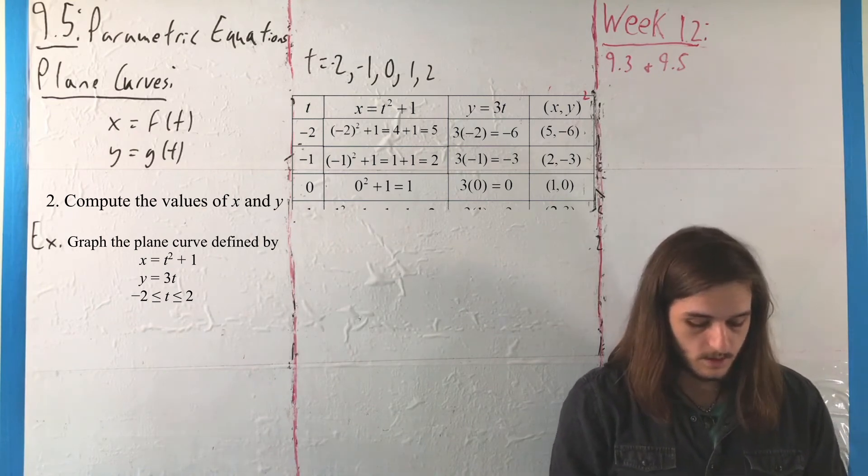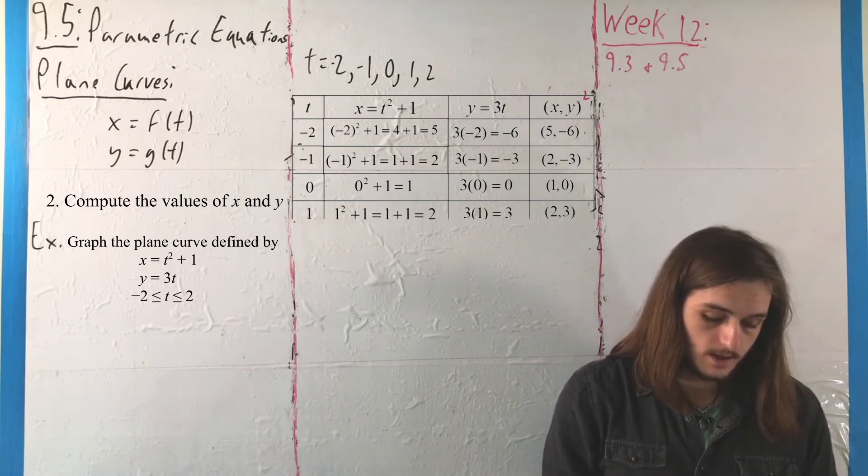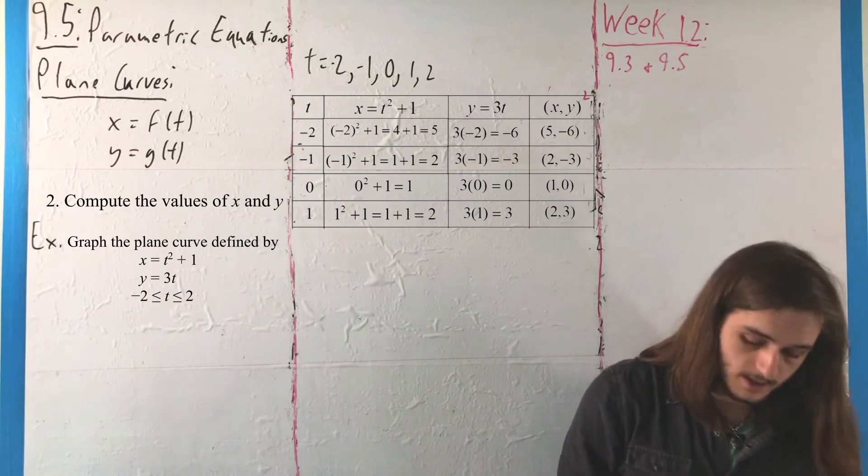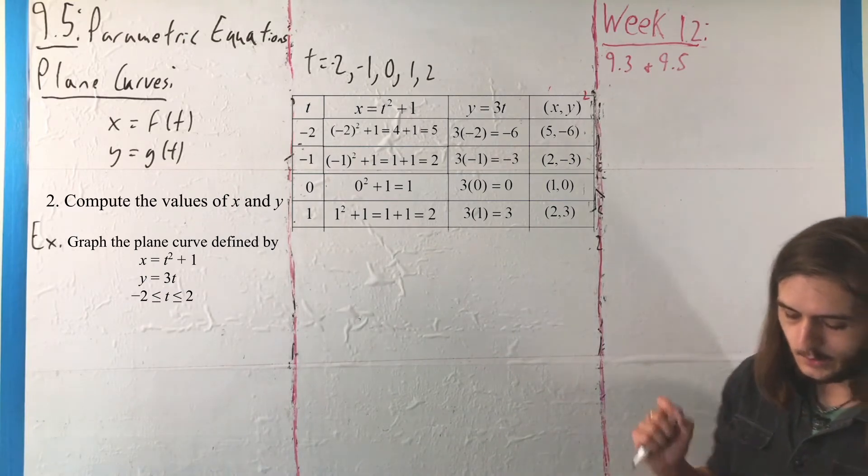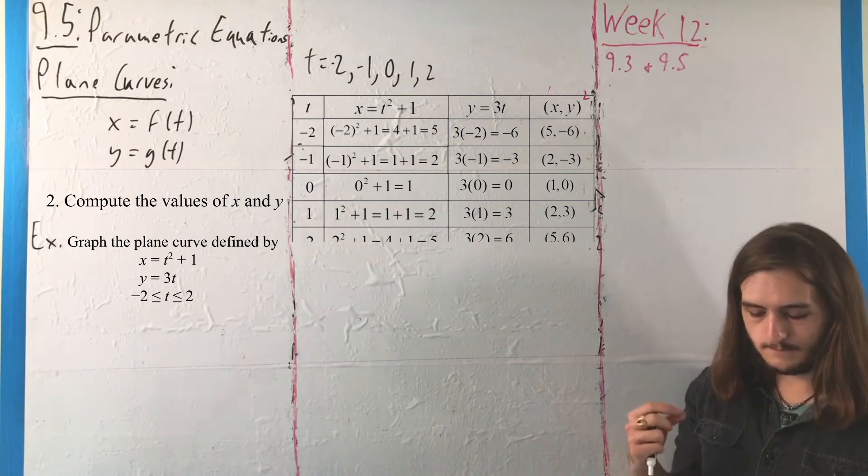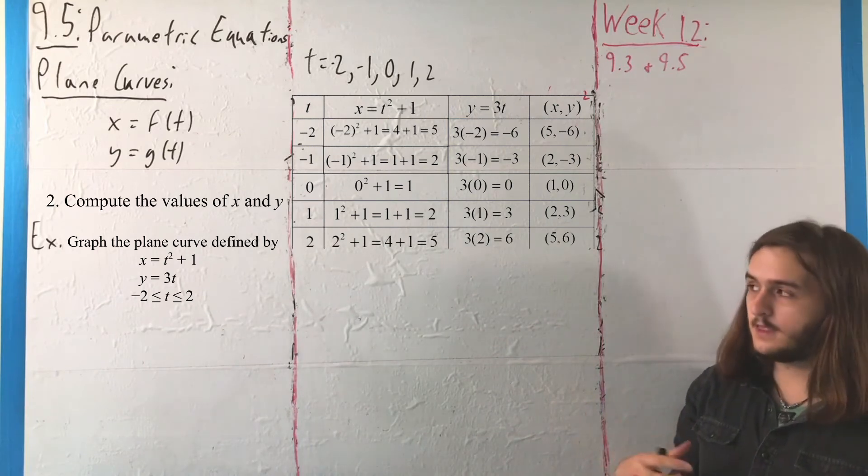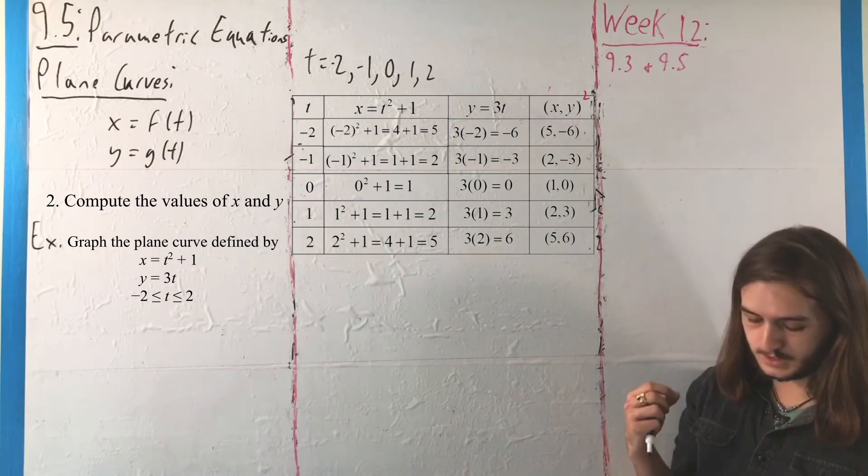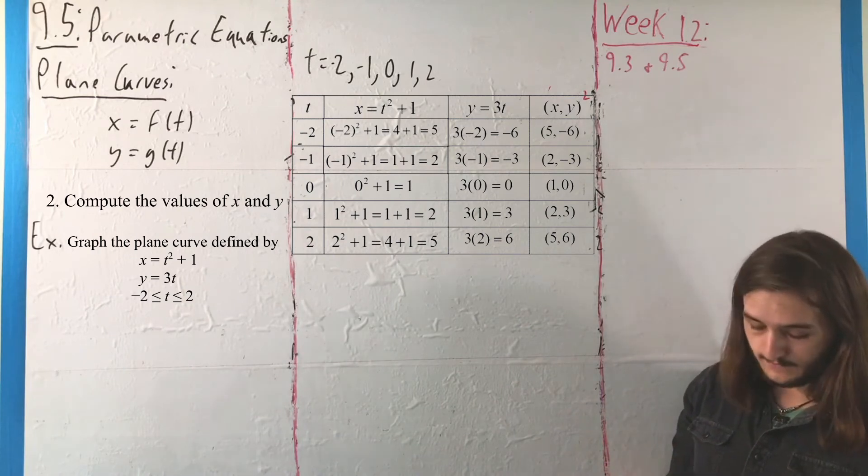At 1, we get 1 squared plus 1, or 2, and 3 times 1, or 3. And then finally, at 2, we have 2 squared plus 1, which is 4 plus 1 equals 5, and 3 times 2 is equal to 6. So we get the point (5, 6).